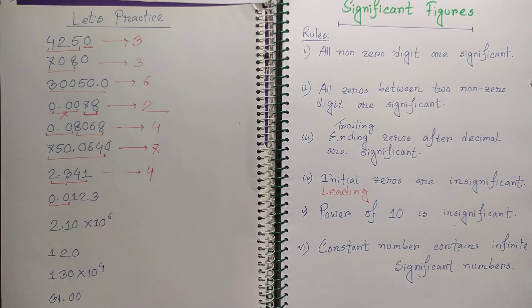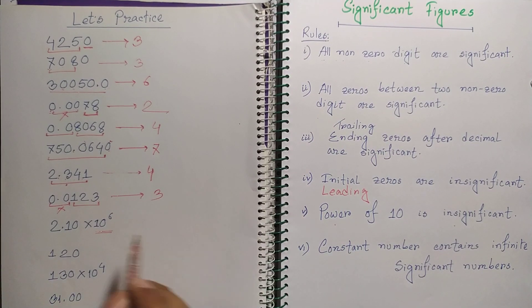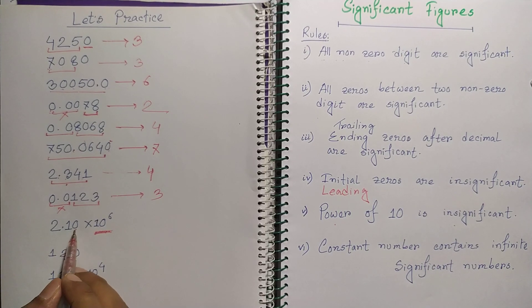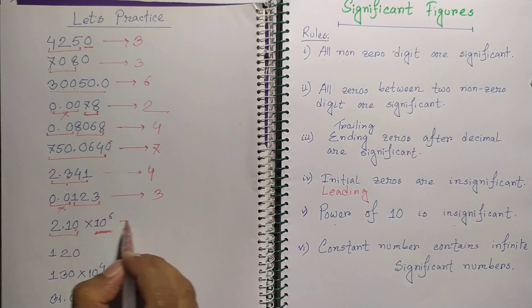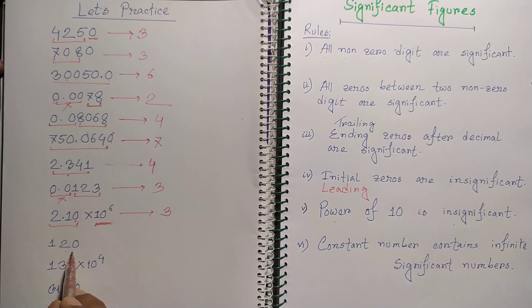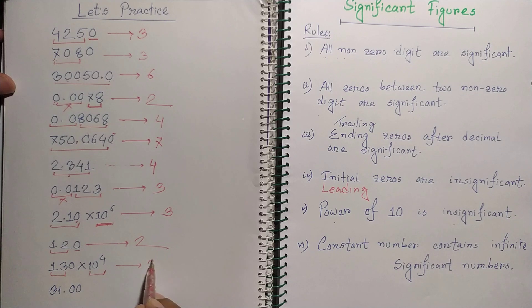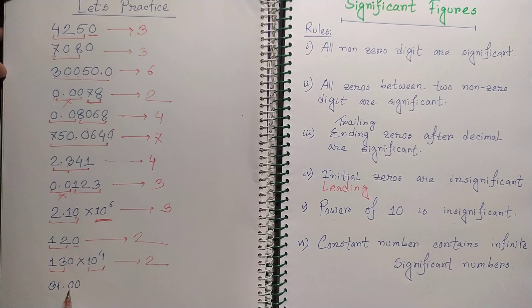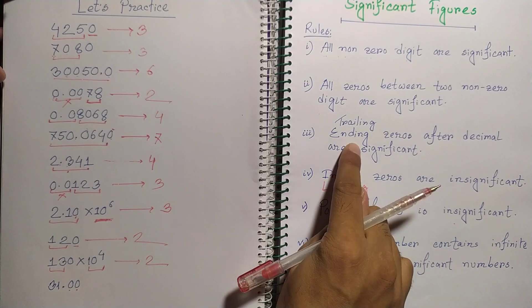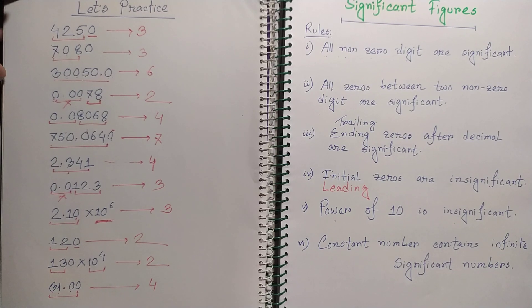For a number with leading zeros, ignore them — 3 significant figures remain. For a number like something × 10⁶: the power of 10 is insignificant, but a trailing zero after the decimal is counted, giving 3 significant figures. For 1,20 × 10⁴ (no decimal): the trailing zero without a decimal is not counted and the power of 10 is ignored, giving 2 significant figures. For a number with 2 zeros after the decimal and 2 non-zero digits before, we have 4 significant figures total.